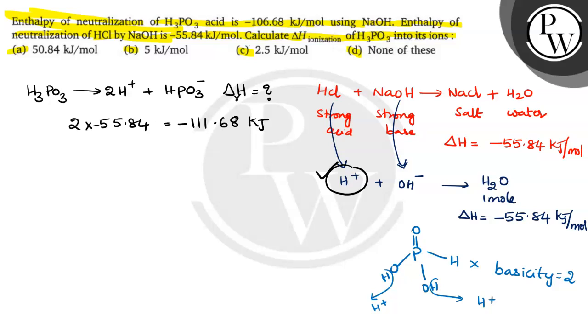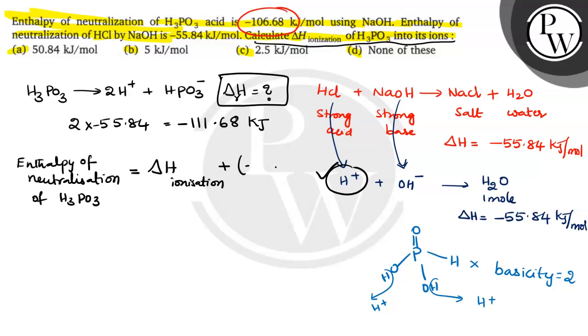Question is, enthalpy of neutralization is given. Calculate the delta H ionization into its ion. So, this is we need to find out from the given data. Delta enthalpy of neutralization of H3PO3 is equal to delta H ionization plus this value minus 111.68.